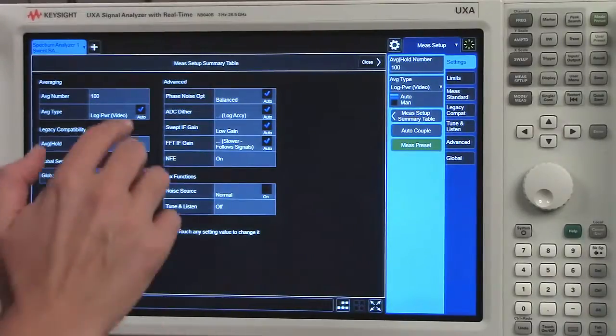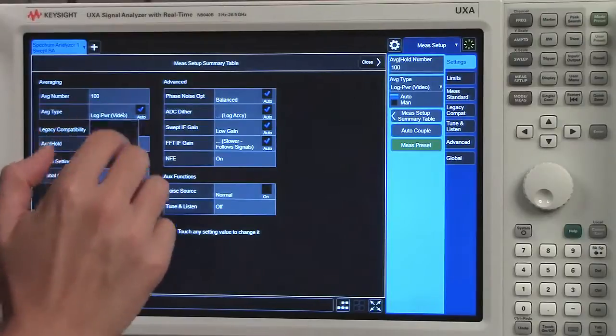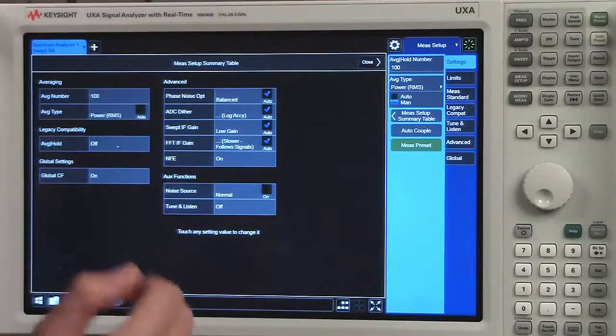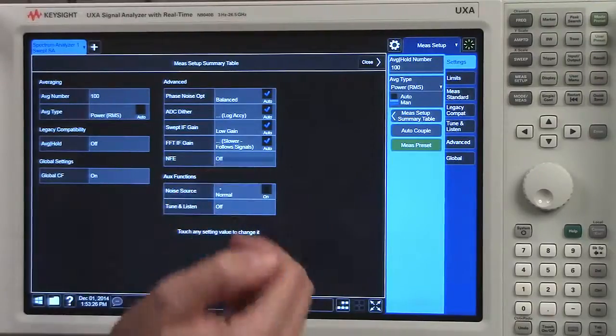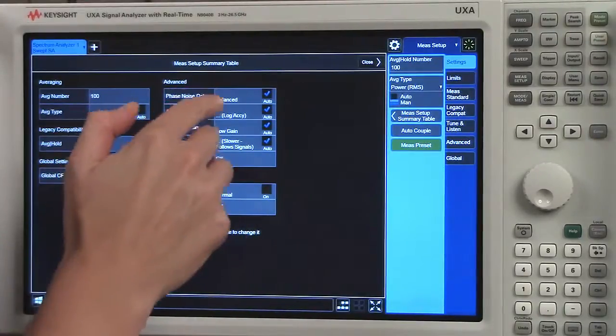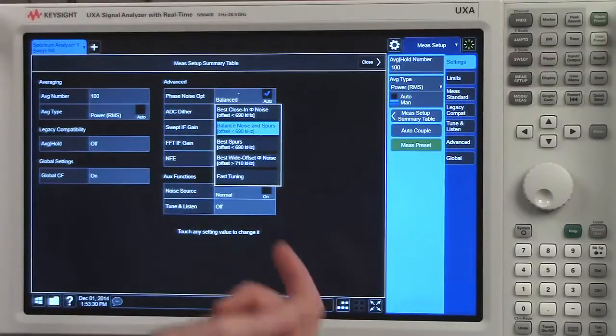For example, if I want the average type, I can change that. I can change that to power RMS and I could turn noise floor extension on or off. Other things like phase noise optimization are included.